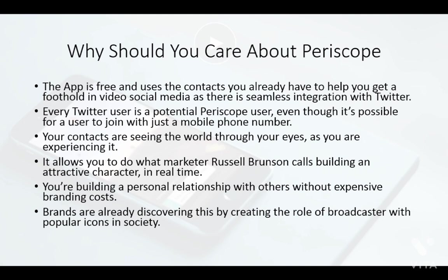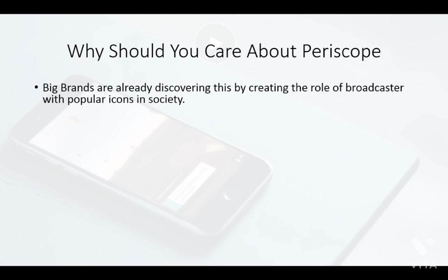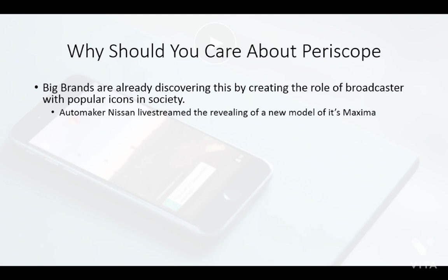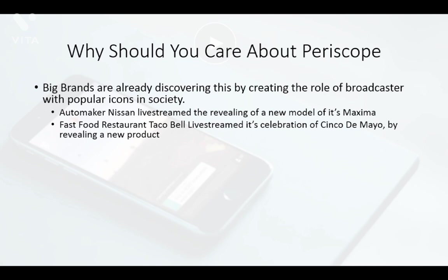Big brands have already discovered this by creating the role of broadcaster with popular icons in society as well as people in their company. For example, automaker Nissan used Periscope to live stream the revealing of a new model called the Maxima, bringing an audience through their Twitter following using live video without paying for actual branding. Fast food restaurant Taco Bell live streamed a special event by revealing a new product, combining a calendar event with a product reveal using Periscope and their Twitter following.